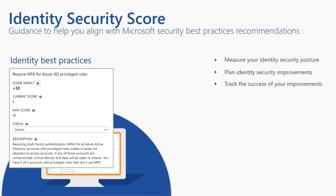Here's an example of an Identity Secure Score recommendation. You can see the score impact, the current score, the maximum score attainable, the status, and a description of the item. Each item also contains additional details such as a link to the location in the Azure AD portal where the item may be configured. Use the link provided here to go directly to your own Identity Secure Score in the Azure portal. In the next video, I will demonstrate the capabilities of the Identity Secure Score in the Azure portal and show you how to best leverage it to increase your security posture.